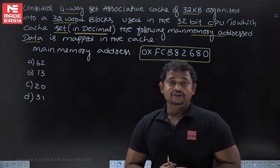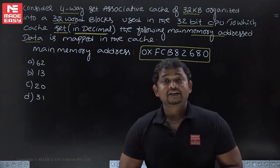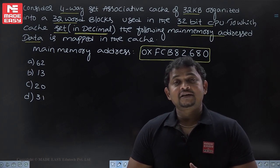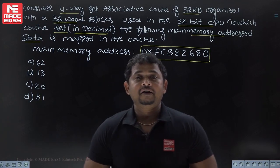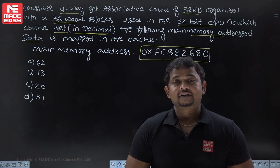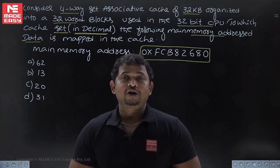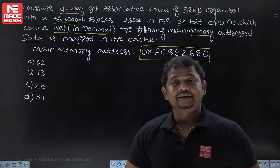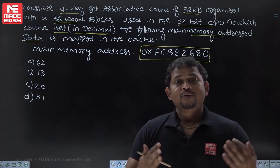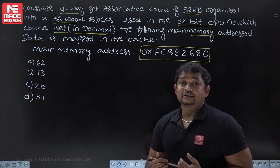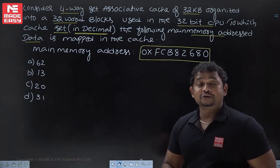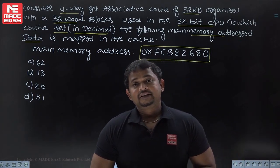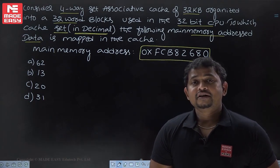In set associative cache design, lines are grouped into sets. How many lines are grouped into a set depends on the configuration — p-way means p lines are grouped into one set. The number of sets equals N divided by p. In this question, four-way means four lines are grouped into one set. We need to calculate the number of sets, then interpret the given address to find the set number where data is mapped.